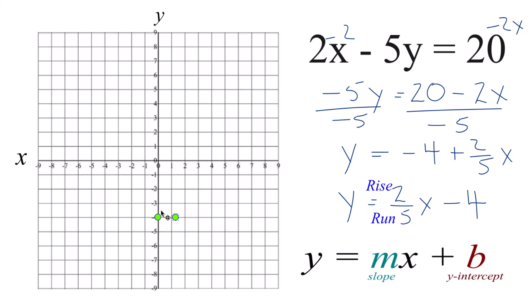So we go to our y-intercept, we go up 1, 2, then we run 1, 2, 3, 4, 5. There's our second point.